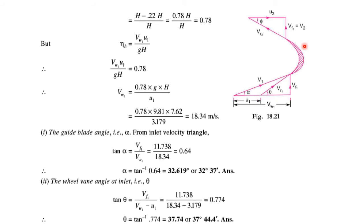This is the velocity triangle for the vane. So (H - 0.22H)/H equals 0.78H/H, that is equal to 0.78.